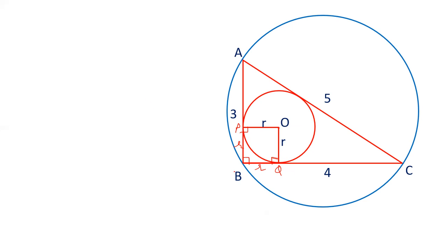AB is given as 3, PB is r. So AP is 3 minus r and QC is 4 minus r.